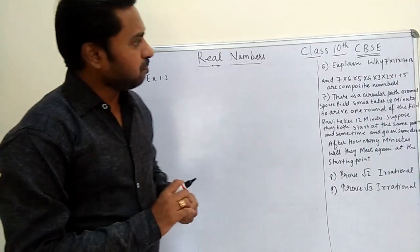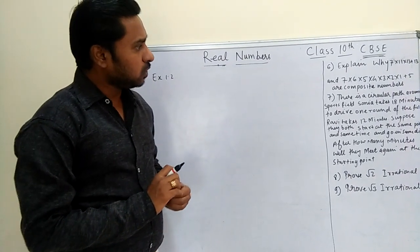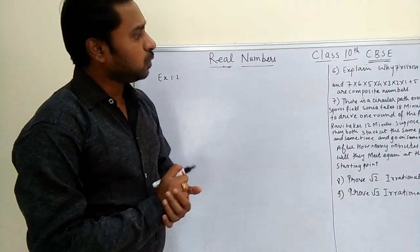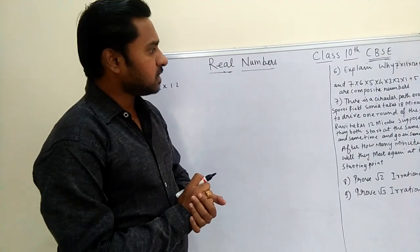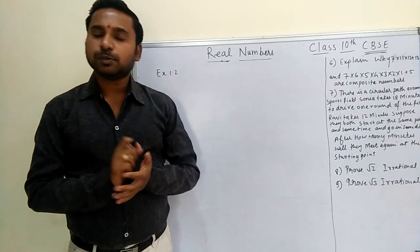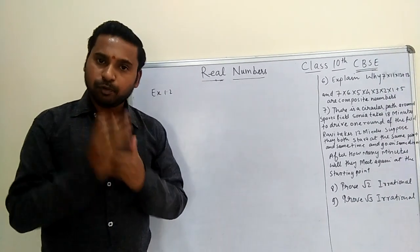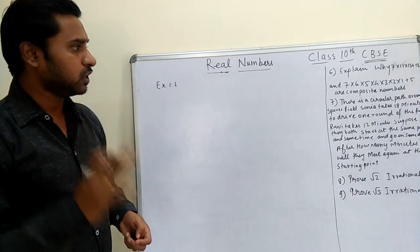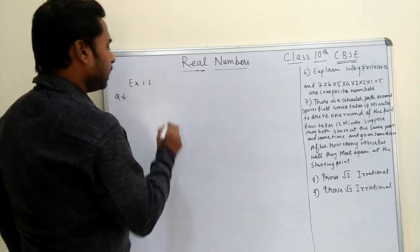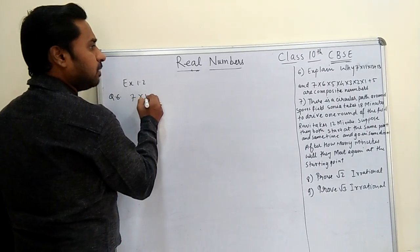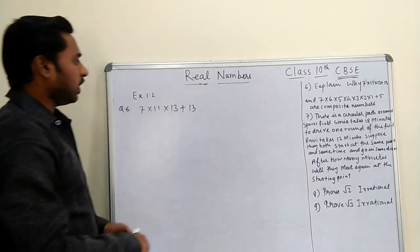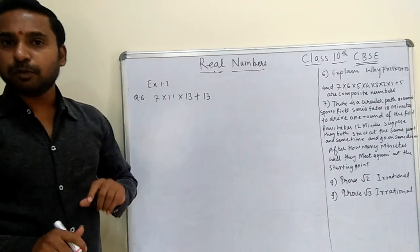Question number 6: Explain why 7 × 11 × 13 + 13 and 7 × 6 × 5 × 4 × 3 × 2 × 1 + 5 are composite numbers. So we have two numbers provided and we have to explain and prove that they are composite numbers. The first number is 7 × 11 × 13 + 13, and we have to prove this number is a composite number.